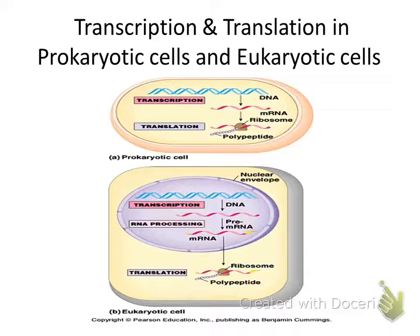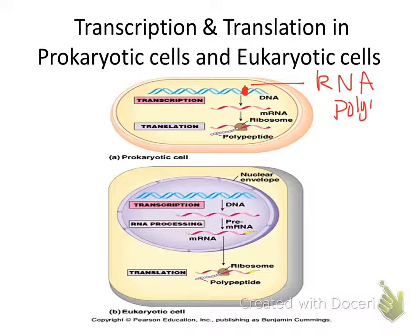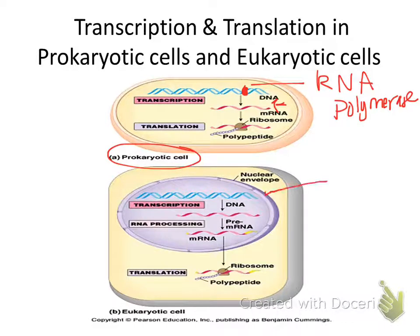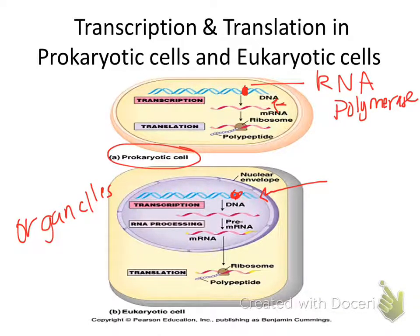This piece of RNA is made by the enzyme RNA polymerase. DNA is going to unzip — there's your RNA polymerase — and it's going to make the RNA. That's in a prokaryotic cell. The bottom picture is in a eukaryotic cell with organelles. DNA unzips, RNA polymerase makes RNA, then DNA zips back up and is used again.